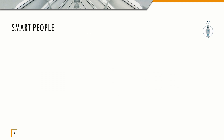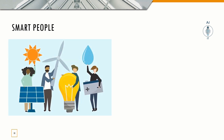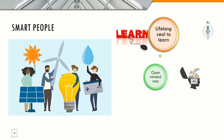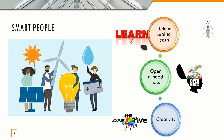The last component of a smart city is smart people. A smart city is incomplete without us. Smart people aims at transforming the way citizens interact via ICT. Smart people should know how to make use of the latest technology and must have three important traits: lifelong zeal to learn, open mindedness, and creativity. These are the six components of a smart city.